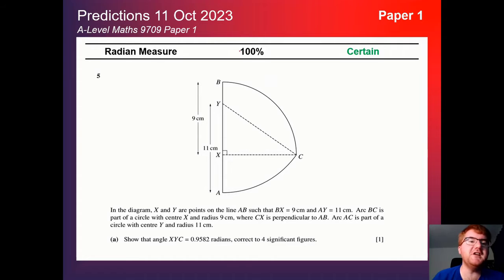And on to the certain category. And the first one here is radian measure. Again, similar to the ad maths, it's a very, very popular topic. Here is an example question here for you. Again, making sure you can work with areas and arcs and using the r theta and half r squared theta formulae is very, very important for this particular paper.